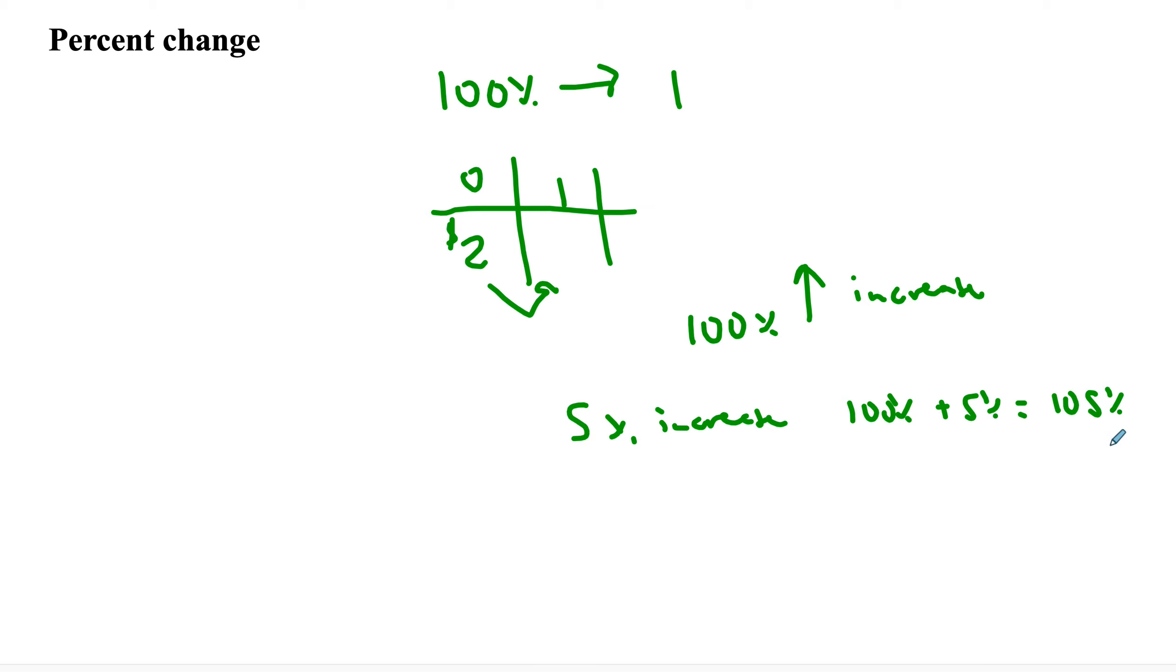we'd multiply by, and this is where it gets tricky, we cannot multiply by 105. That would mean we'd have 105 times as much money, which doesn't sound right, does it? 5% increase and we have 105, no, no, that wouldn't make sense. We'd go from $2 to $210 in one day. Yeah, no banks doing that.